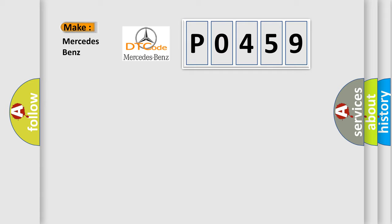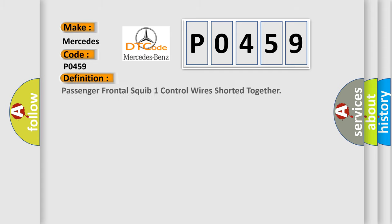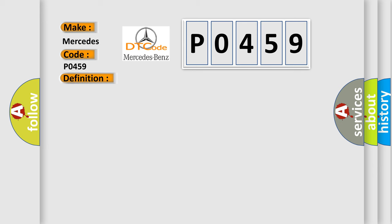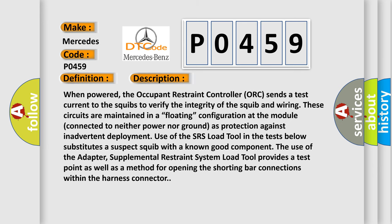What does the diagnostic trouble code P0459 interpret specifically? The basic definition is: Passenger frontal squib one control wires shorted together. When powered, the occupant restraint controller (ORC) sends a test current to the squibs to verify the integrity of the squib and wiring. These circuits are maintained in a floating configuration at the module, connected to neither power nor ground, as protection against inadvertent deployment.